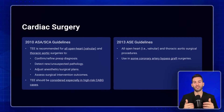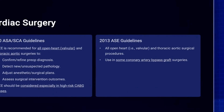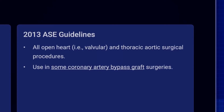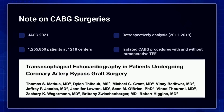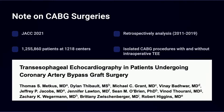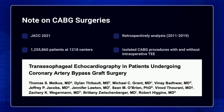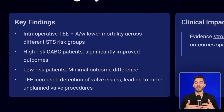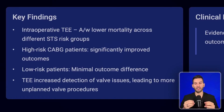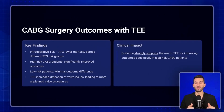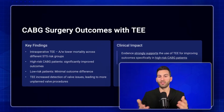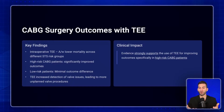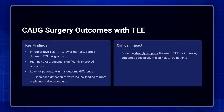The guidelines also say to consider TEE in high-risk CABG cases. The 2013 ASC guidelines have the same recommendations for open heart and thoracic aorta procedures, with language recommending consideration in some CABG surgeries. A major paper from the Journal of American College of Cardiology in 2021 — a retrospective analysis over a multi-year period covering over a million patients at over a thousand centers performing isolated CABG — found that intraoperative TEE globally lowered mortality across different STS risk groups. However, the benefit was most seen in high-risk CABG patients, with very minimal difference in low-risk patients. Another interesting finding was that TEE use was associated with more unplanned valve procedures, which makes sense because if you don't look, you don't know.